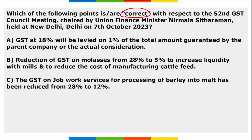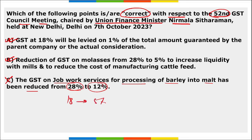Regarding the 52nd GST Council meeting chaired by Union Finance Minister Nirmala Sitharaman held in New Delhi on 7th October: options A and B are correct, but option C is wrong. C says GST on job work services for processing barley into malt was reduced from 28% to 12%, but actually it was reduced from 18% to 5%.